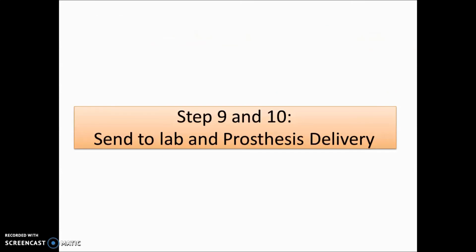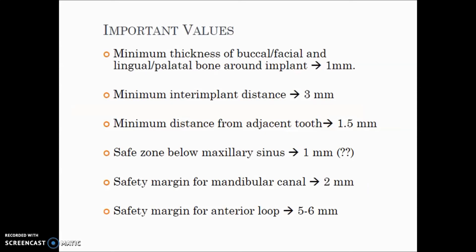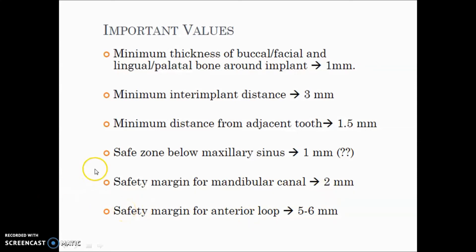After sending to the laboratory, crown delivery is done by cementing with resin-modified dual cure cement. Important values from Carl Mish: minimum buccal/lingual bone thickness around implant — 1 mm; minimum inter-implant distance — 3 mm; minimum distance from adjacent tooth — 1.5 mm; safety zone below the maxillary sinus — 1 mm; safety margin for the mandibular canal — 2 mm; safety margin for the anterior loop — 5 to 6 mm.